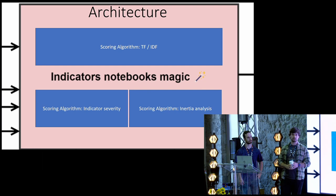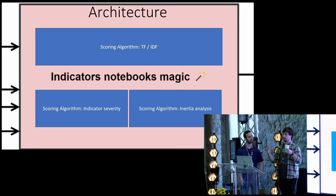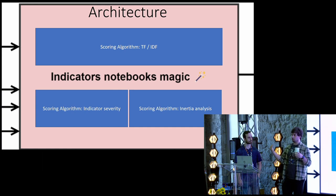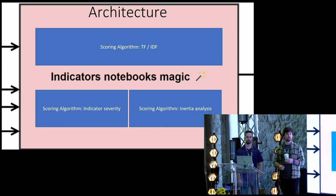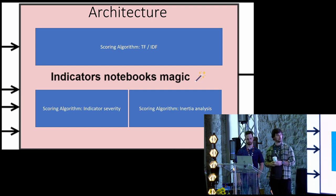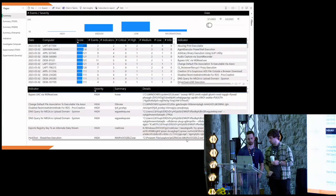And then the inertia analysis, it's more like a baseline. If a host or an entity gets like a score, it's stable for a week and then get a spike in score, then we can just boost its score with using like the delta.